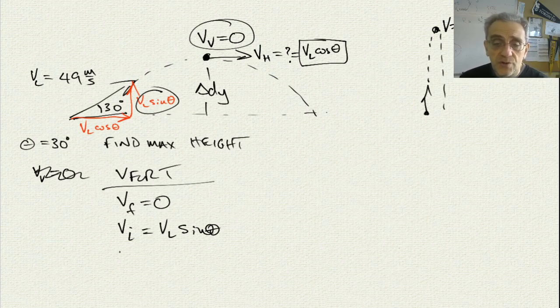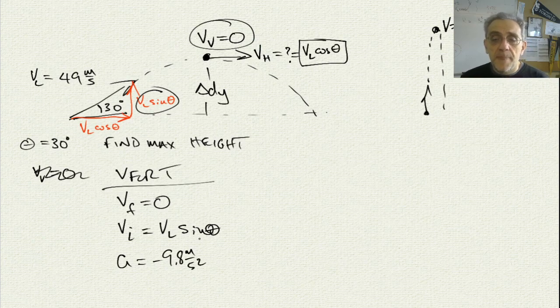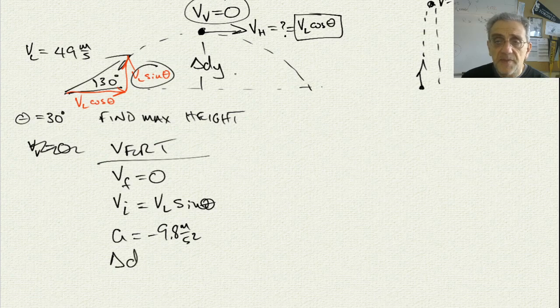And, of course, we know that the acceleration is equal to negative 9.8 meters per second squared. And we're looking for, we need to find delta D. That's this. That's what we're looking for.